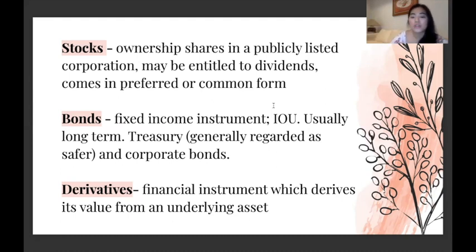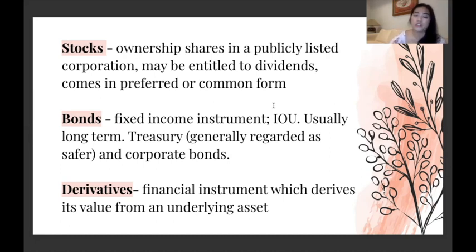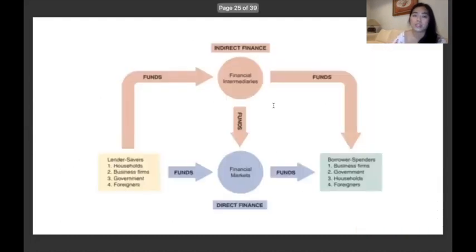Derivatives are financial instruments that derive their value from an underlying asset. There are a lot of examples from the 2008 crisis, like credit default swaps or mortgage-backed securities. They are also helpful in the form of swaps, forward contracts, or commodities. This is just a visualization of indirect finance through either intermediaries or financial markets.